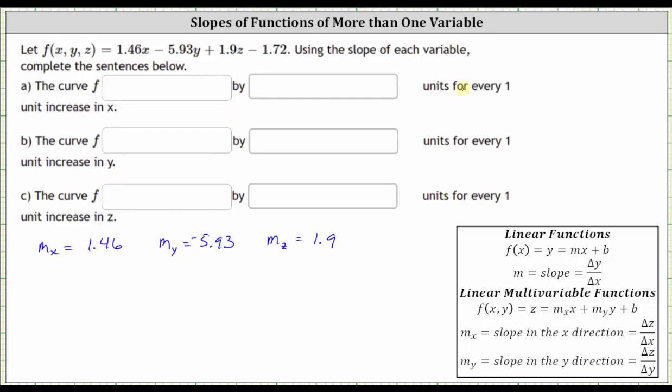So for part a, because we're concerned about every one unit increase in x, we use the slope in the x direction of 1.46. Because it's positive, the curve f increases by the slope amount of 1.46 units for every one unit increase in x.